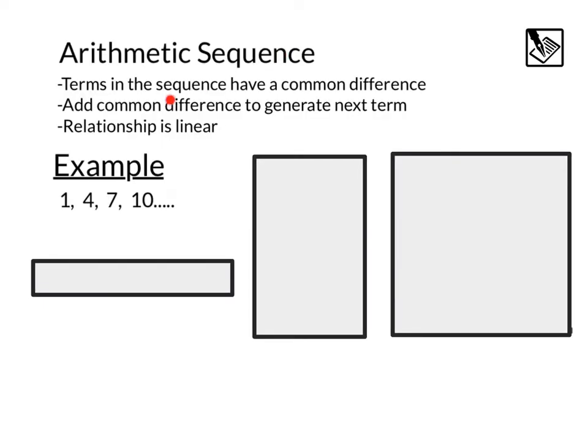Our first type of sequence is an arithmetic sequence. In these sequences, terms in the sequence have a common difference, and that common difference is basically a number that we're adding to the last number to get the next term. We also know that arithmetic sequences are linear.